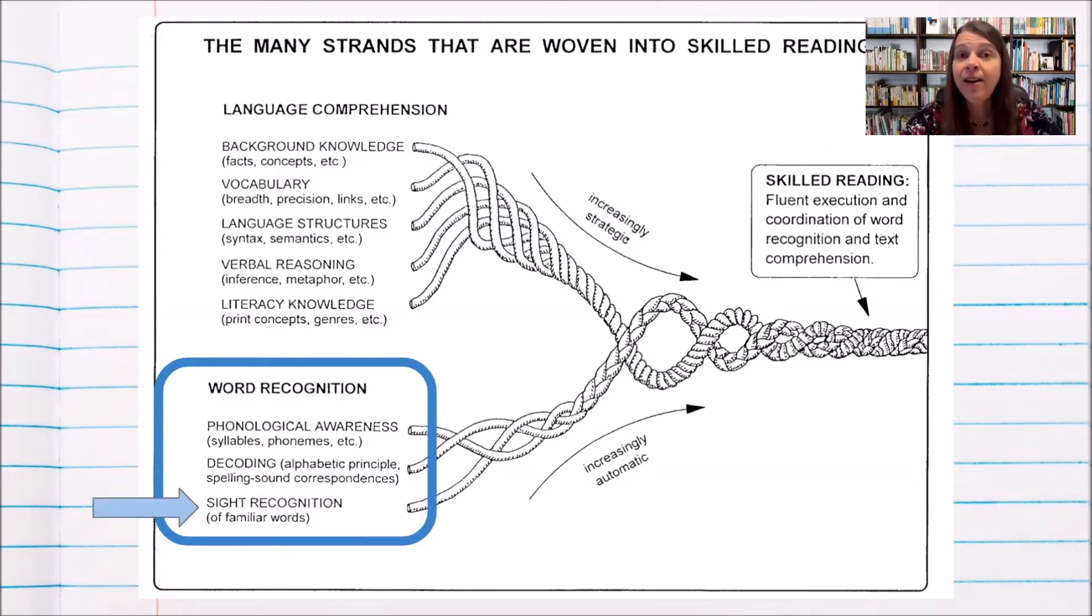Then we have sight recognition. Now, this is not about sight words. This is about knowing words as if by sight. This is about storing words in long-term memory through making connections between the sounds of language and the letters we use to represent those sounds.